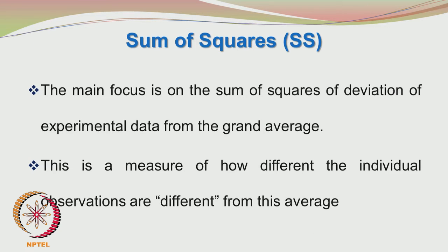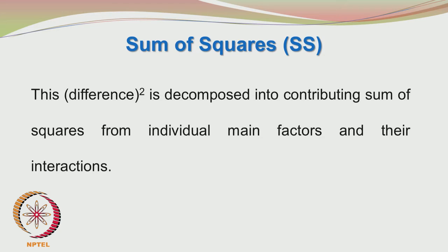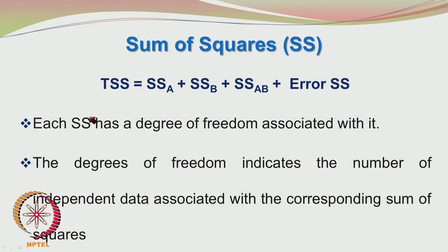The total sum of squares is the sum of squared deviations of experimental data from the grand average. This total sum of squares may be decomposed into contributions from factor A, factor B, the interaction AB, and the random error component: SS_Total = SS_A + SS_B + SS_AB + SS_Error. Once you split these entities, you can compare the contribution of each with the total sum of squares.